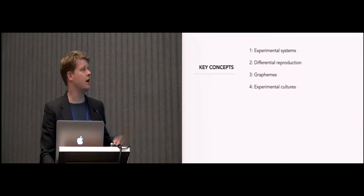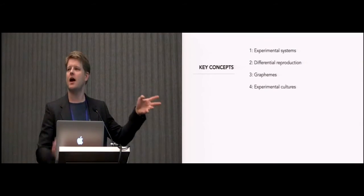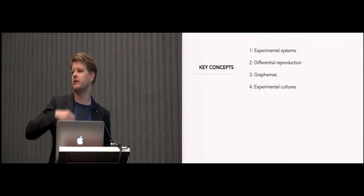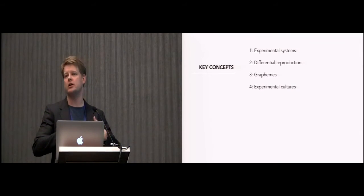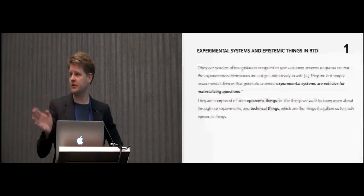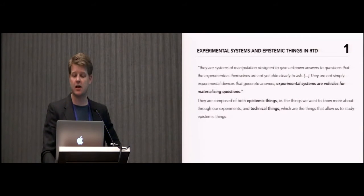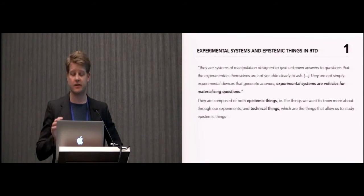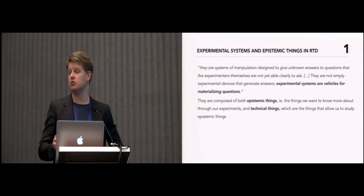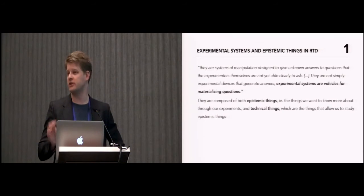But back to Rheinberger. I'm going to briefly run through these four key concepts and then begin to scratch the surface of what it might mean if we look at research through design through this lens. Firstly, experimental systems. I briefly introduced it before. These are systems of manipulation designed to give unknown answers to questions that the experimenters themselves are not yet able clearly to ask. They're not simply experimental devices that generate answers. Experimental systems are vehicles for materializing questions.